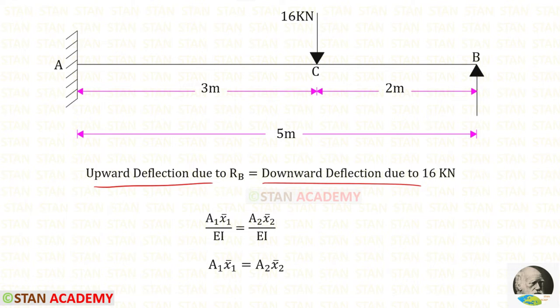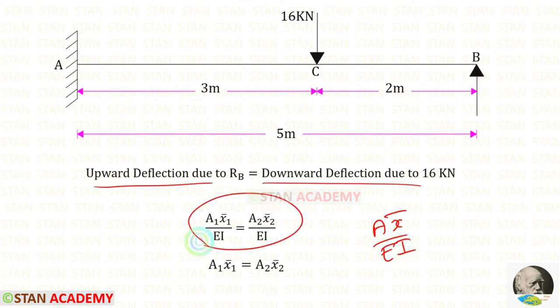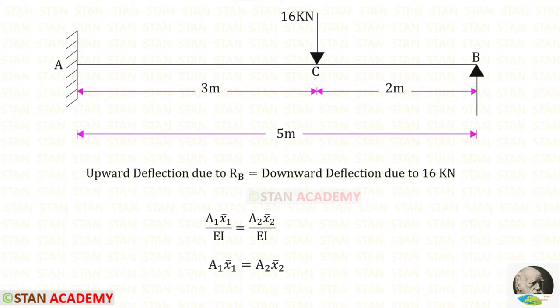To find both of these deflections we use the moment area method. The formula for deflection in the moment area method is: area times x̄ divided by EI. Since the flexural rigidity EI is constant throughout this beam, we can eliminate it from both sides, giving us: Area1 × x̄1 = Area2 × x̄2.